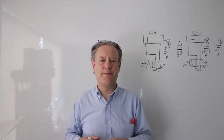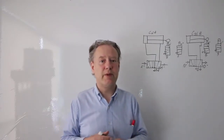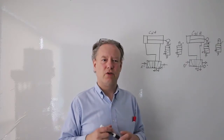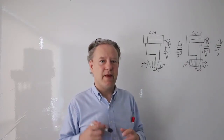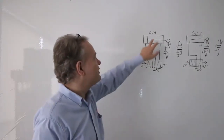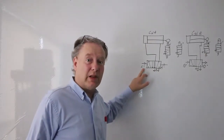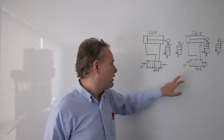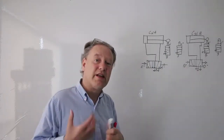We have a control statement and we have a sequential statement. The control statement is essentially the actions themselves. We talk about the actions of cylinders — A plus means A extends. Cylinder A has pilot A plus, and cylinder B has pilot B plus. A capital letter represents an action.